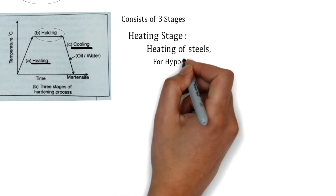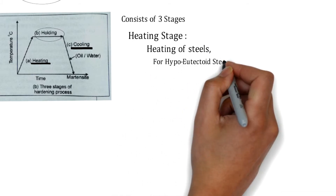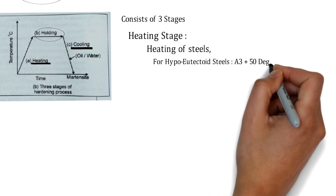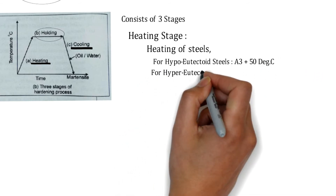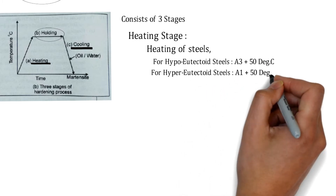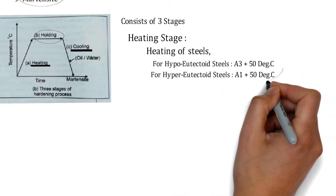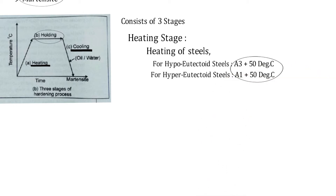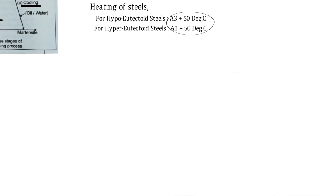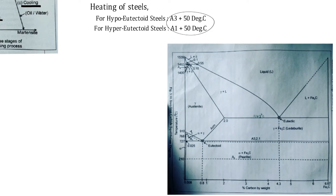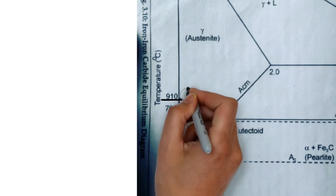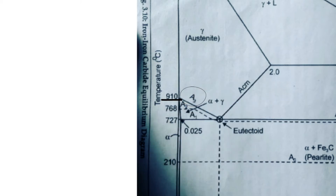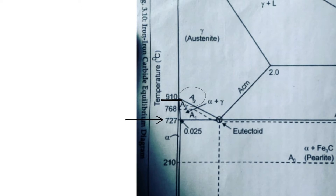For hypo-eutectoid steels the heating temperature is A3 plus 50°C, and for hyper-eutectoid steels it is A1 plus 50°C. Here A3 and A1 are the critical lines from the iron-carbon equilibrium diagram. The A3 line represents 910°C — the formation of austenite — while A1 represents 727°C.